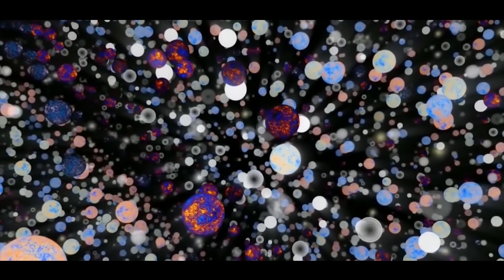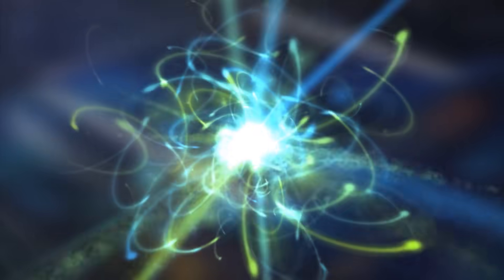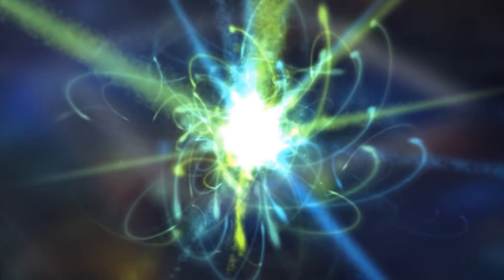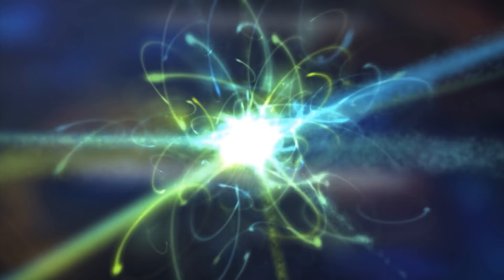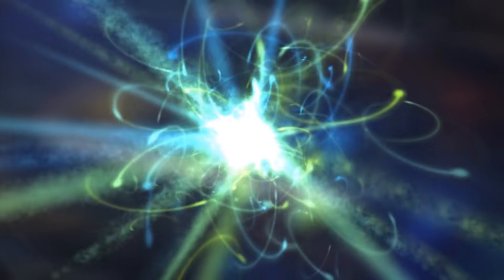But first, we need a little bit of physics to understand everything. In quantum theory, an elementary particle such as an electron doesn't exist in a single state but a multiplicity of locations, velocities, and orientations.